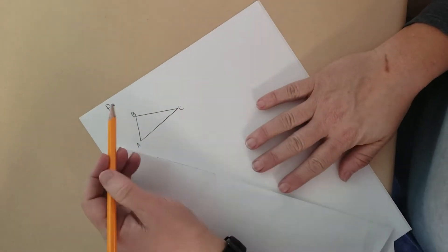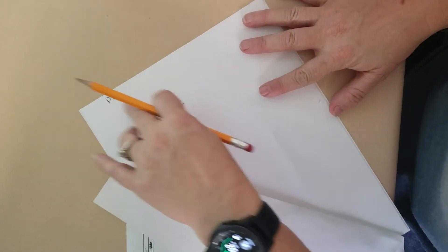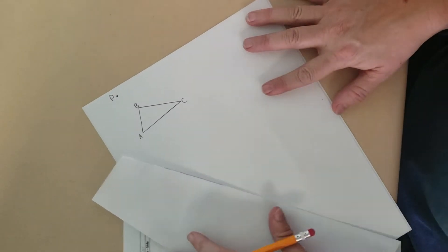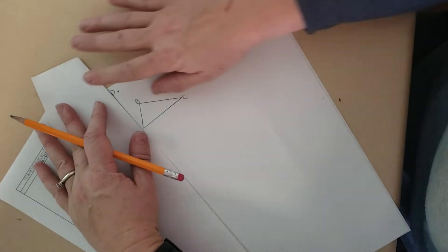So what I'm doing is I'm going to extend this triangle out in such a fashion as to create two similar triangles.